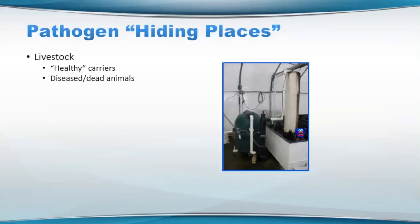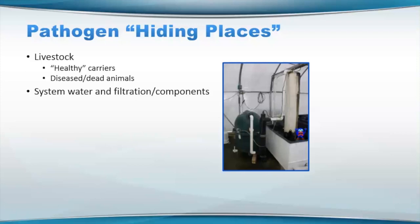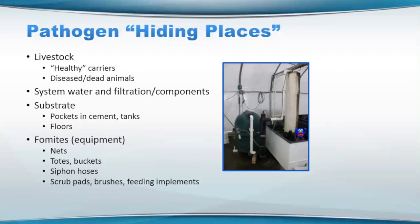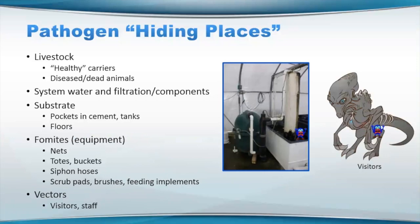Hiding places — we talked about this with reservoirs. To reiterate: you can have healthy carriers — animals that maybe overcame a disease. You're getting them from your source, maybe they were kind of sick a little bit but got better, and now they're carrying some organism that your fish on site have not seen before. Dead animals will potentially carry things as well. System water and filtration components — we talked about that already. Substrate, things in pockets in the cement or tanks or on the floor, as we also discussed. All these things can harbor pathogens.